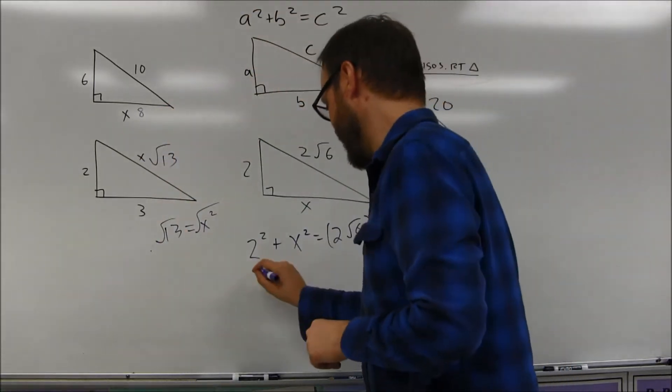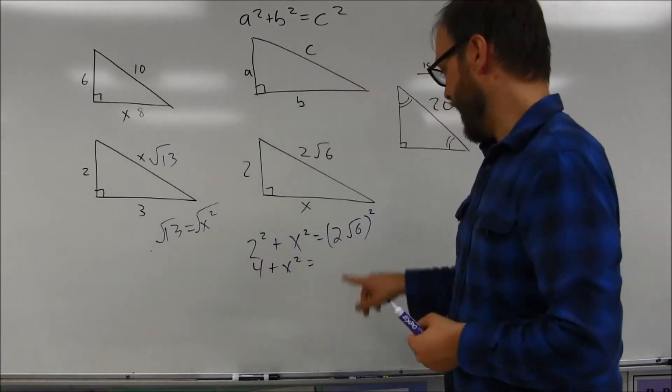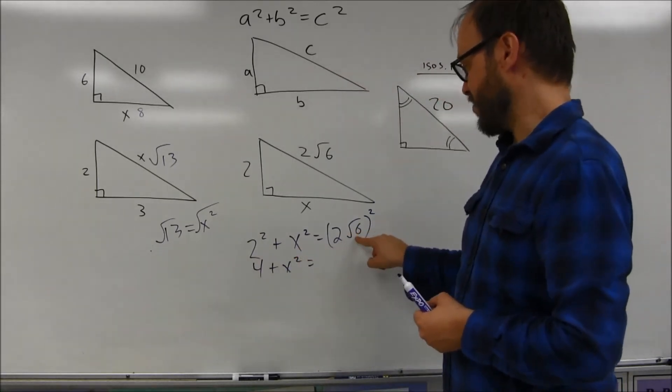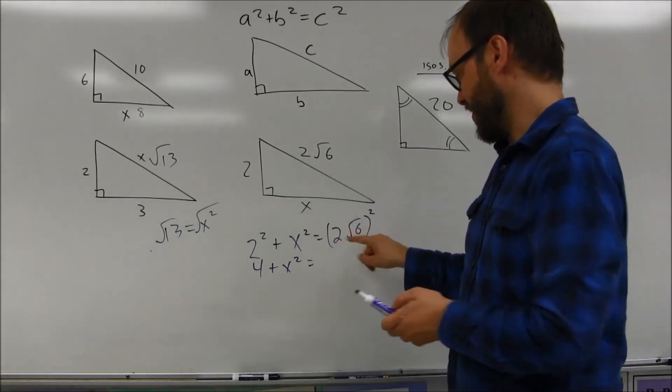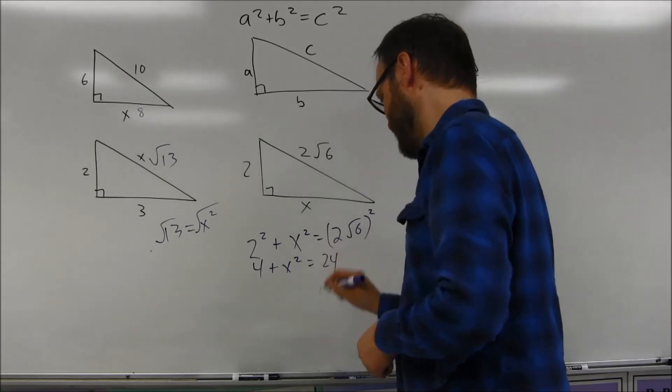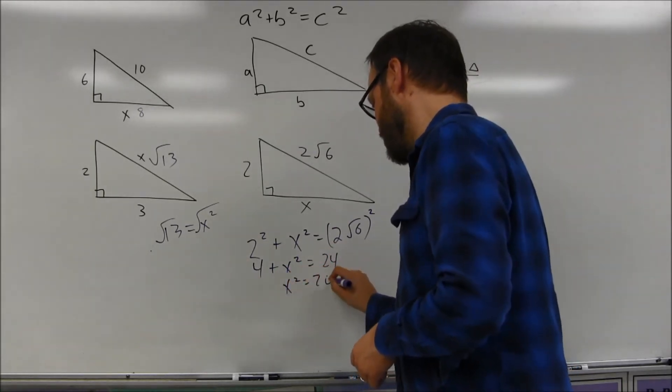So in this case here, I'm going to get 4 plus x squared is equal to 2 squared is 4. The square root of 6 squared is 6. These are being multiplied together. So 4 times 6 is going to be 24. If you subtract 4 from both sides, you get x squared is equal to 20.